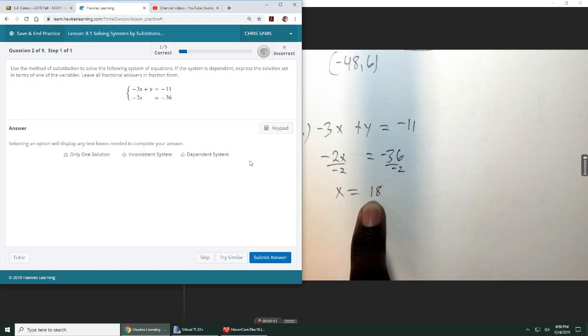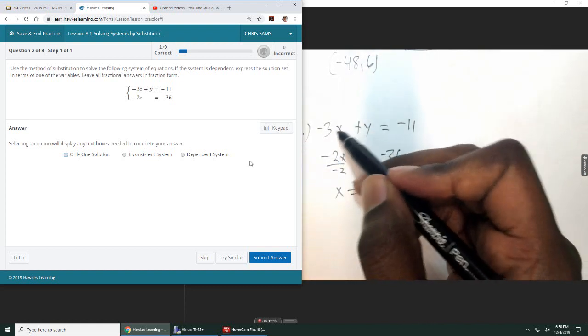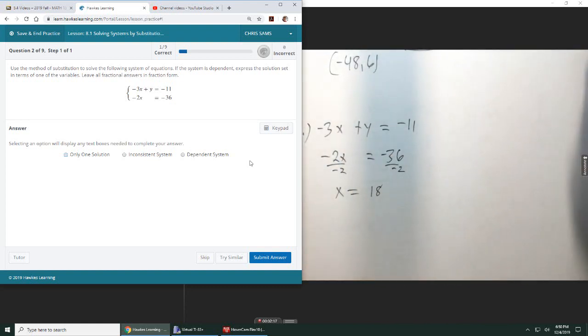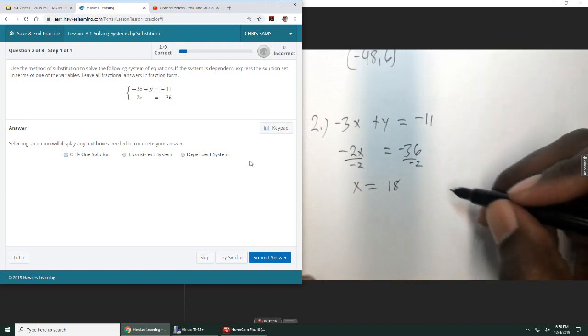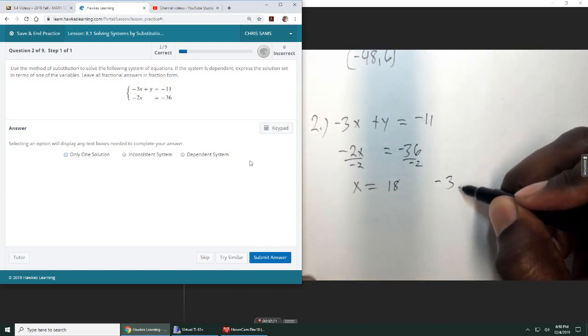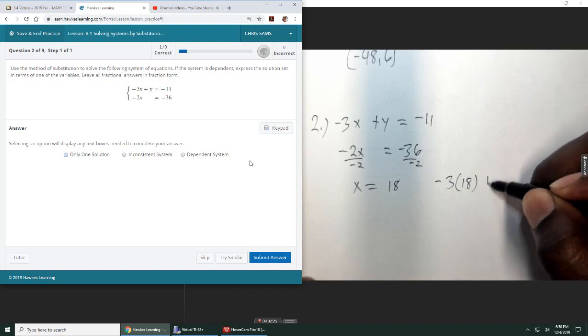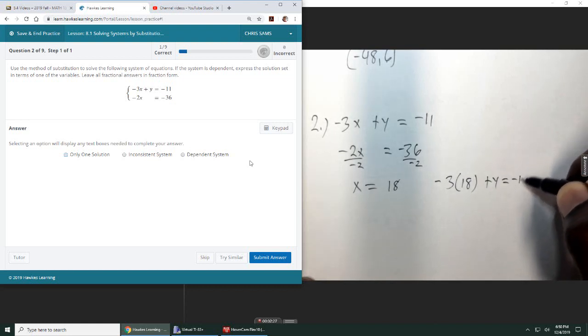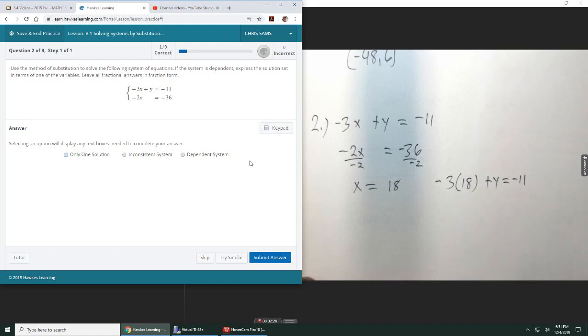So x equals 18, we're going to use that and substitute it into the other equation. So we're going to do negative 3 times 18, we're going to put that in for x, plus y equals negative 11.